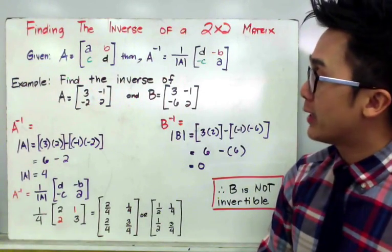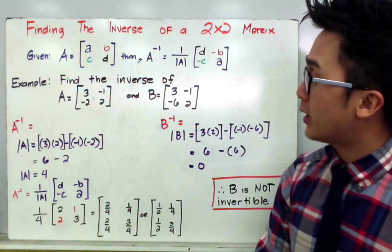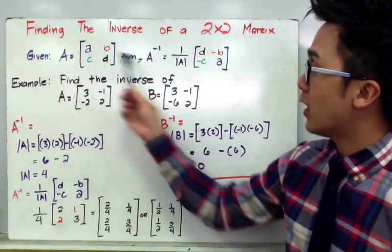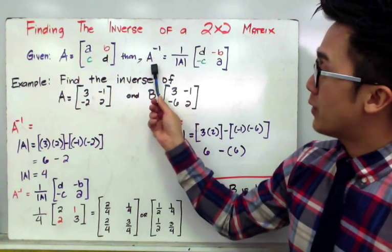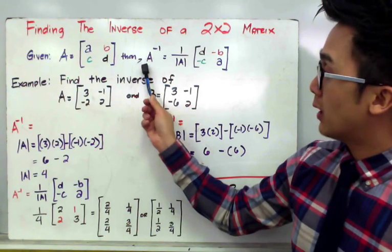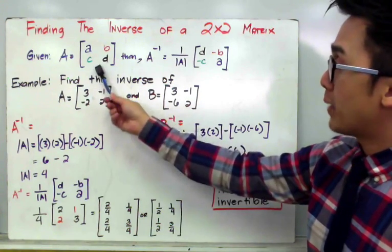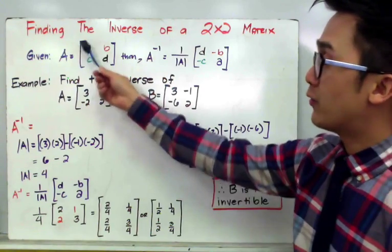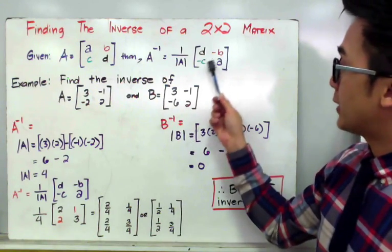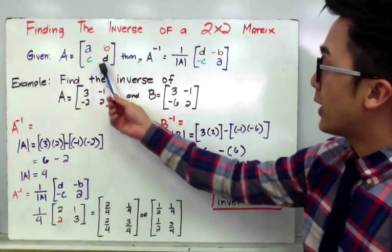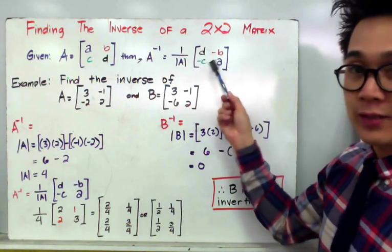Now we're going to learn how to find the inverse of a 2 by 2 matrix using a formula. If matrix A is given by entries A, B, C, D, the inverse is 1 over the determinant of A times the transformed matrix. To transform the matrix, interchange the positions of the first diagonal — so D and A swap — and change the sign of the second diagonal to negative B and negative C.